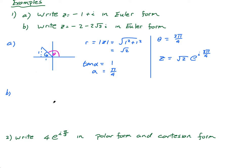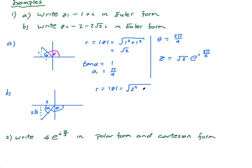Let's do one more. Part B: z = -2 - 2√3. So we're in the third quadrant: the real part is -2 and the imaginary part is -2√3. This is α. r = |z| = √(2² + (2√3)²) = √(4 + 12) = √16 = 4. Nice.